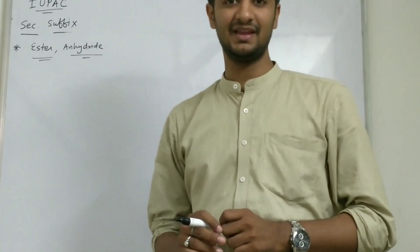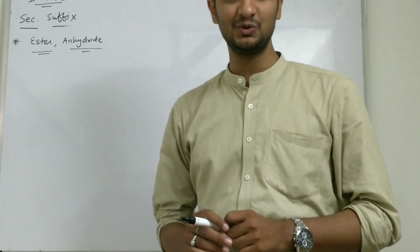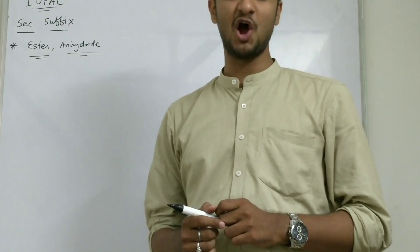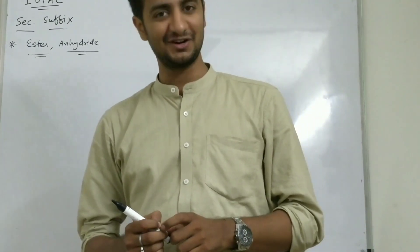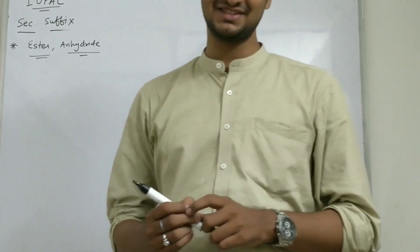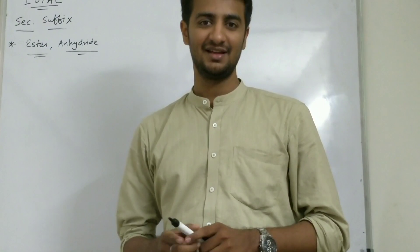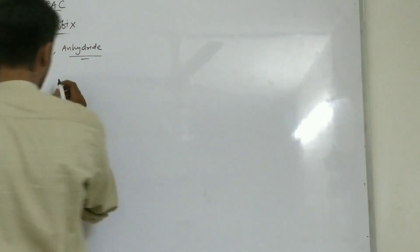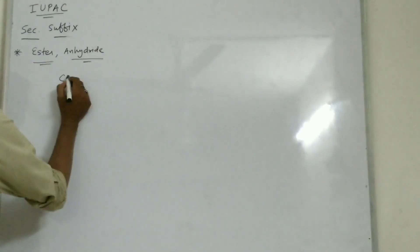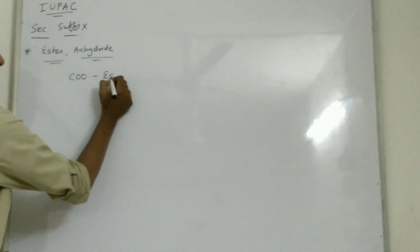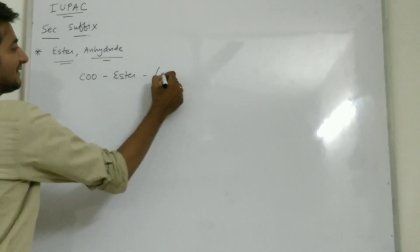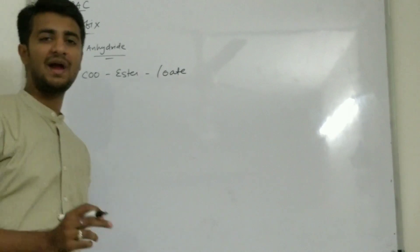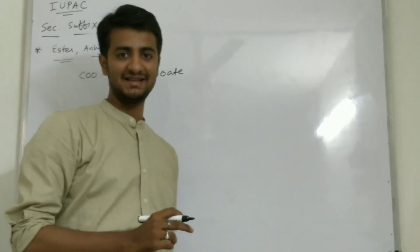Welcome students. In this video we will discuss the nomenclature of the most important functional groups: ester and anhydride. First of all, ester — the C double bond O group is known as ester and it has the suffix '-oate'. The technique is quite different for ester.